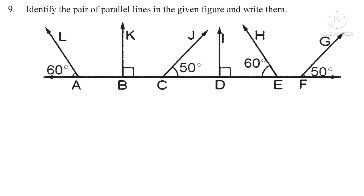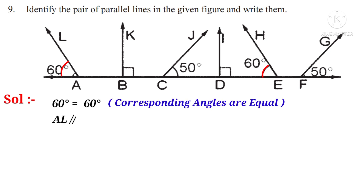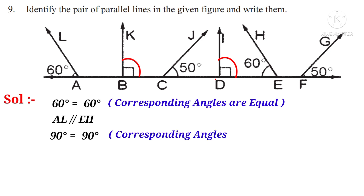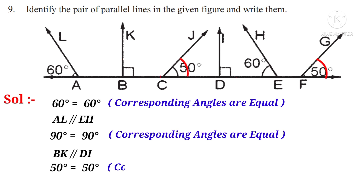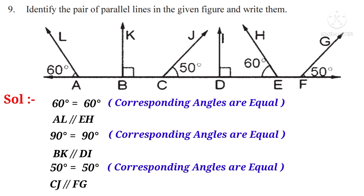Problem 9. Identify the pair of parallel lines in the given figure. Solution: 60 degrees equals 60 degrees — one interior, one exterior, same side — so corresponding angles are equal, meaning AL is parallel to EH. 90 degrees equals 90 degrees — corresponding angles equal — so BK is parallel to DI. 50 degrees equals 50 degrees — corresponding angles equal — so CJ is parallel to CFG.